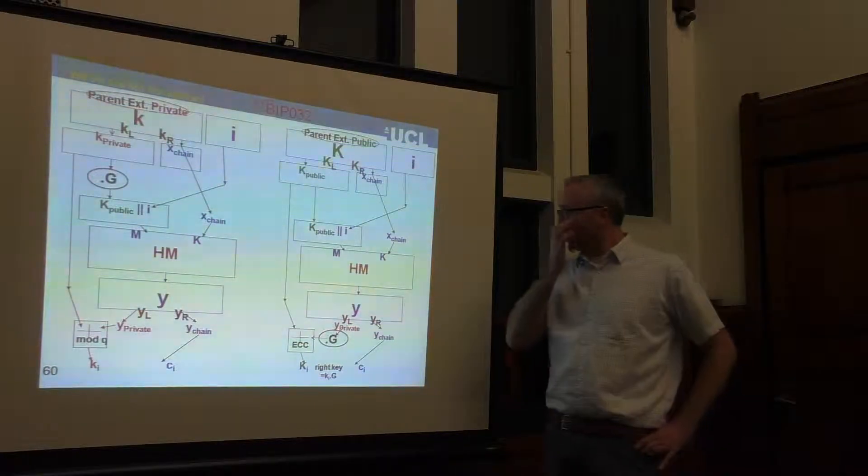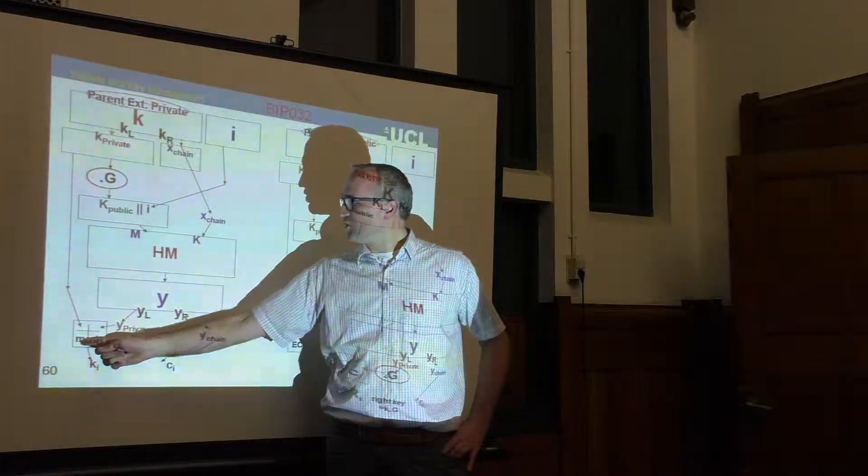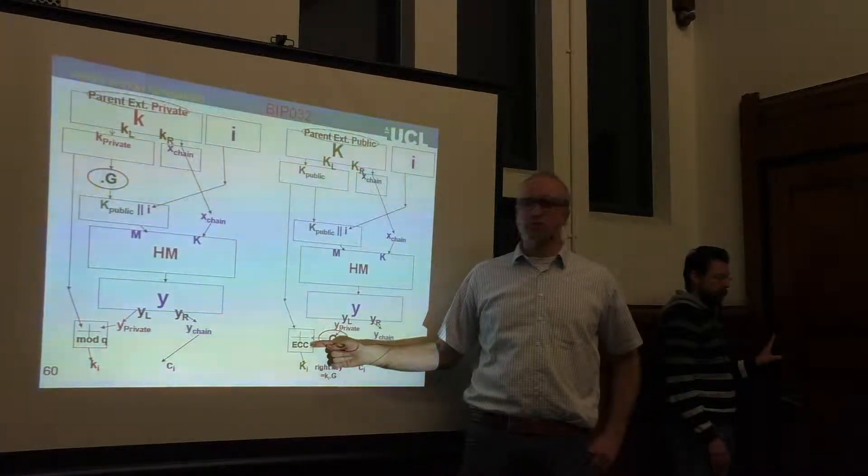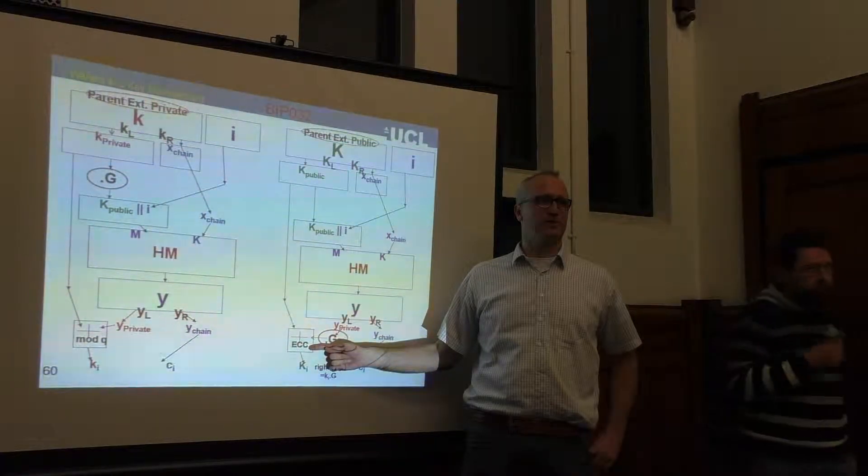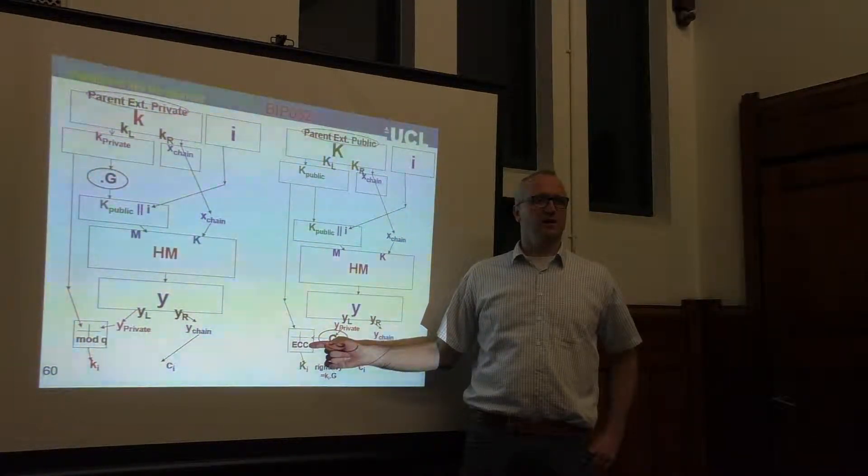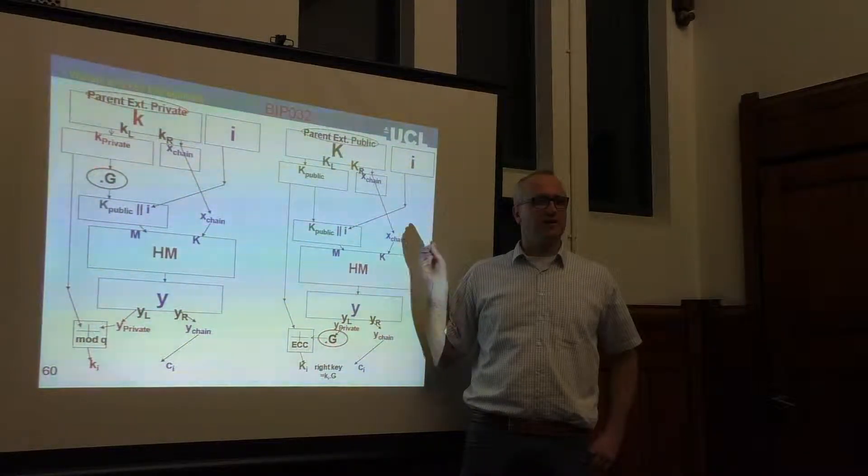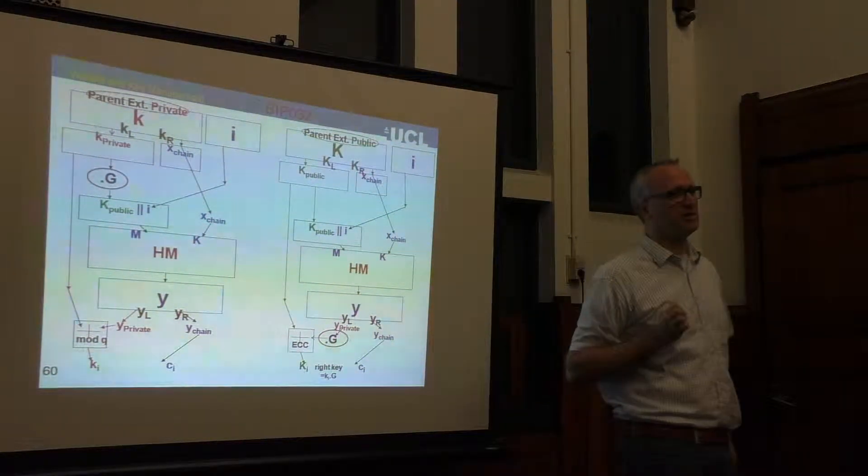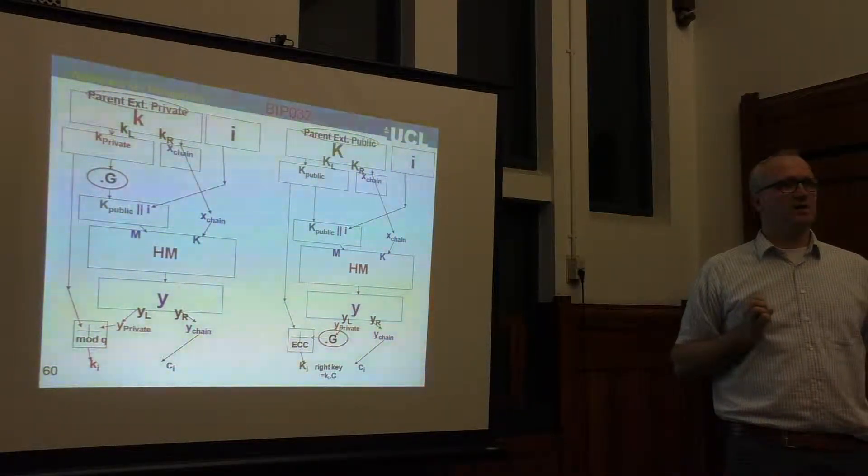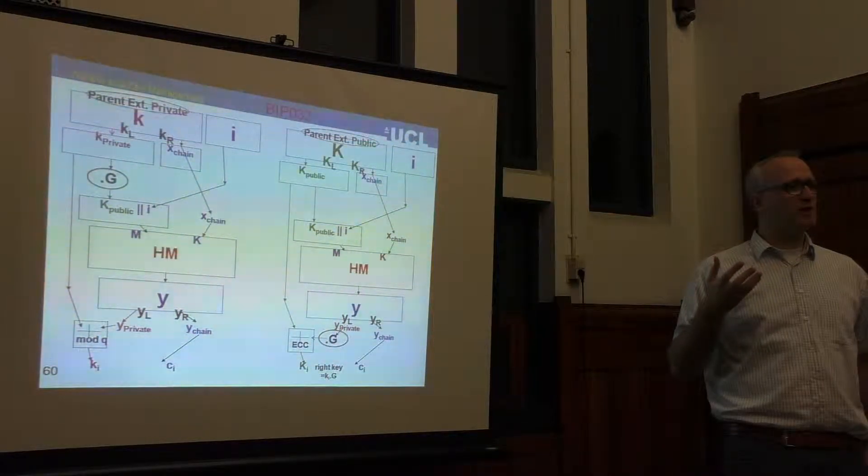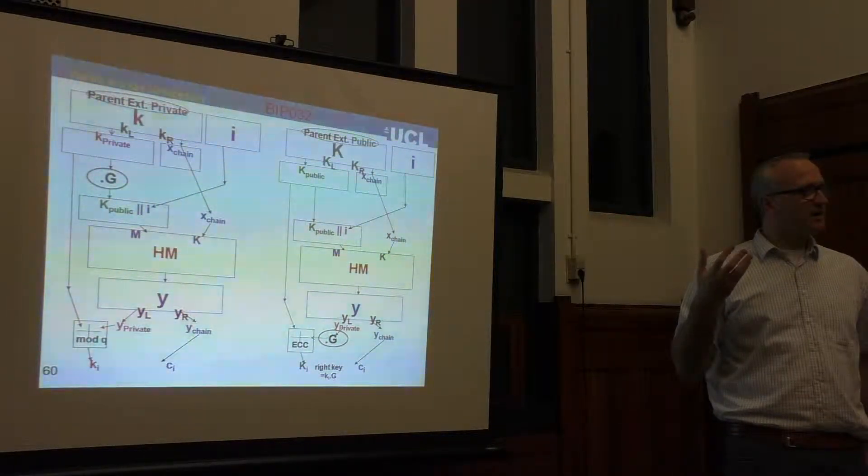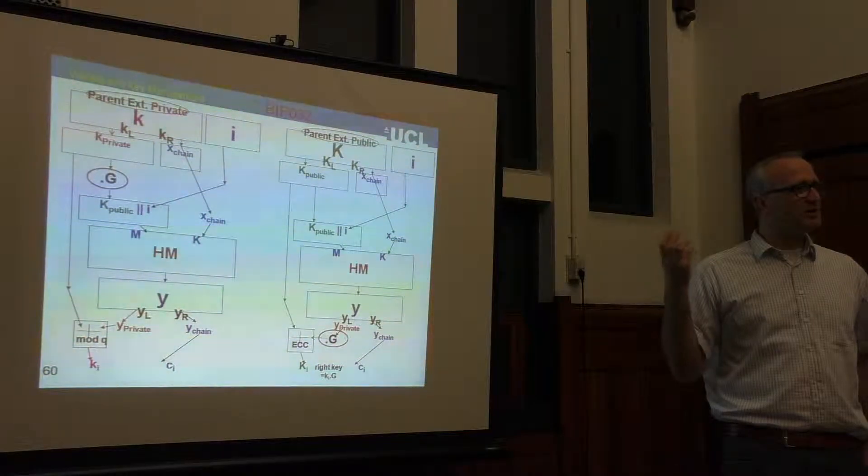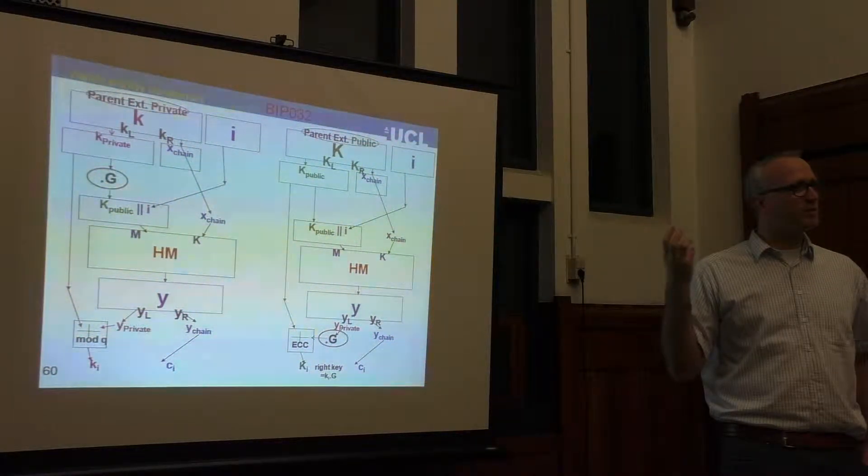This is done due to the homomorphic property of the elliptic curve. Basically, the fact that this addition modulo Q translates, when you multiply everything by the point on the elliptic curve, into the addition of two points of the elliptic curve. The enabler here, in this key management scheme, is the homomorphic property of the elliptic curve.